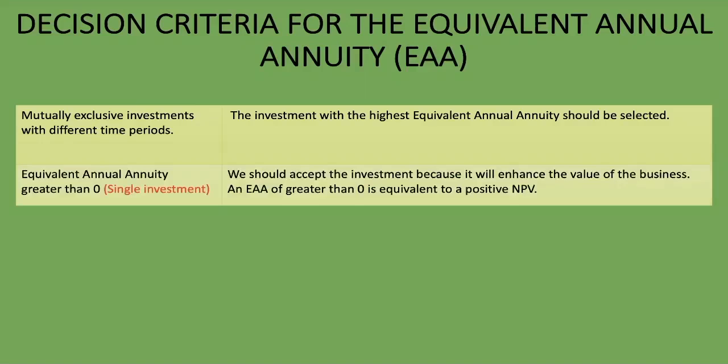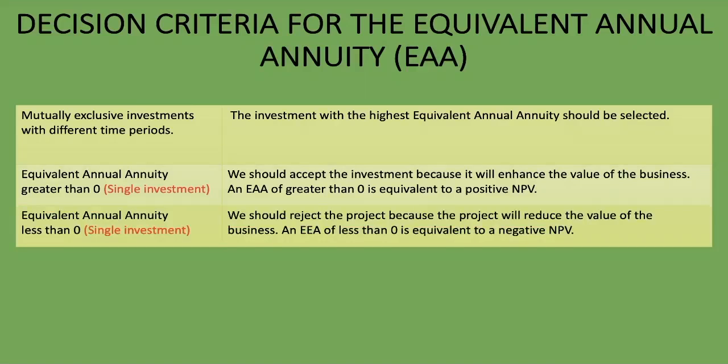For a single investment, if the equivalent annual annuity is greater than zero, then we should accept the investment because it will enhance the value of the business — this is equivalent to a positive NPV. If it's less than zero, then we should reject the project because it will reduce the value of the business, which is equivalent to a negative NPV.